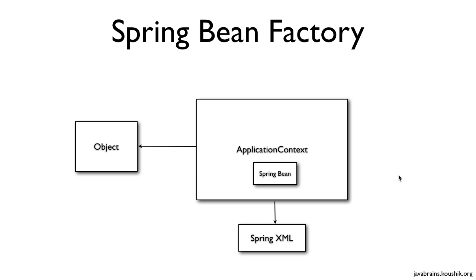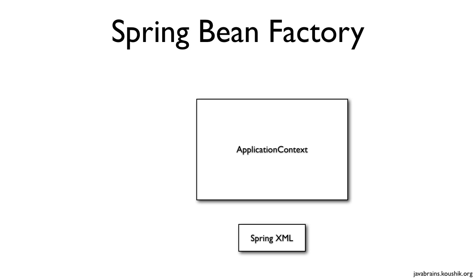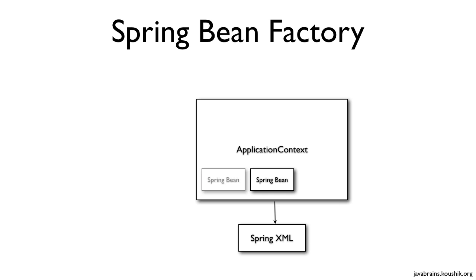By default, when we start the Spring container — that is, when we define the application context by providing an XML — the application context reads the spring.xml and looks at all the beans available in it, and actually creates them by itself. Note that there is still no call to getBean(). Without any call, the application context during initialization has already initialized all the Spring beans configured in the spring.xml.